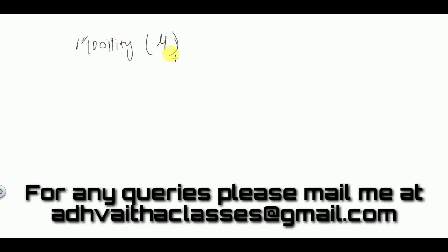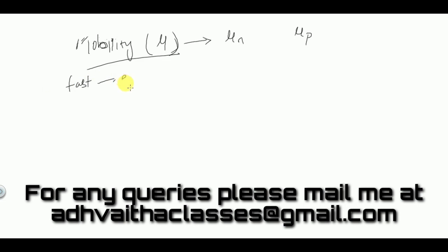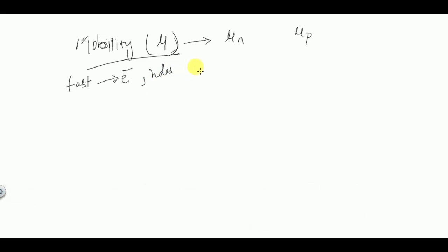Next we discuss the mobility of charge carriers, represented by μ. Mobility for electrons is written as μₙ and for holes as μₚ. Mobility represents how fast the charge carriers — electrons and holes — are moving inside the semiconductor from one place to another.